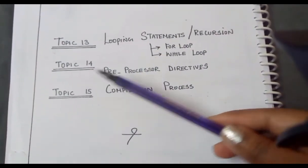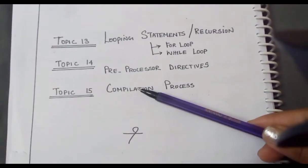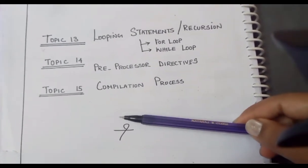Topic 14 is preprocessor directives, and the 15th topic is compilation process. So unit 1 has these 15 topics.